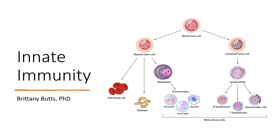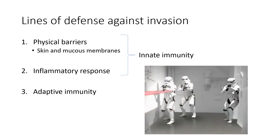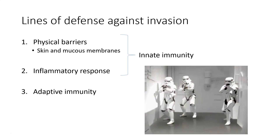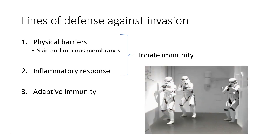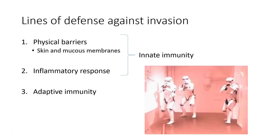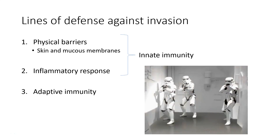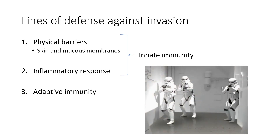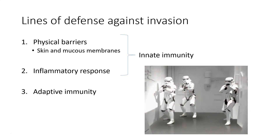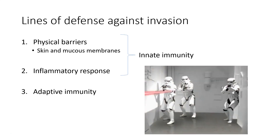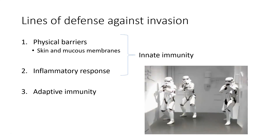In this video we will have a brief review of innate immunity. We have several lines of defense against invasion by microorganisms. This includes our physical barriers such as our skin and mucous membranes and the inflammatory response. Together these make up our innate immunity. We also have adaptive immunity which provides more long-term immunity, and that will be discussed in a separate video.